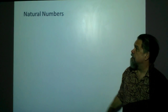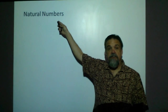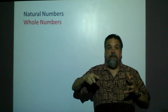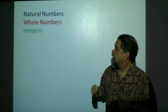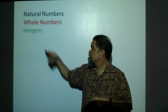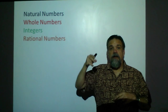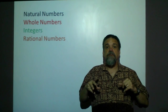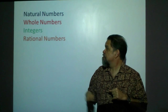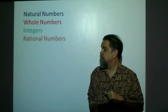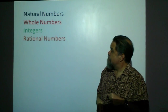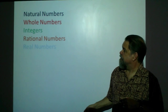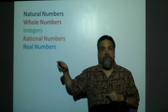In summary: we started with the natural numbers, we added zero to get the whole numbers, then we added the negative numbers to get the integers, then we added every single possible ratio of integers — every possible fraction of integers — to get the rational numbers, then we added even more irrational numbers to get the real numbers.